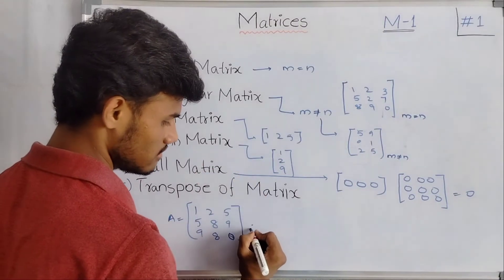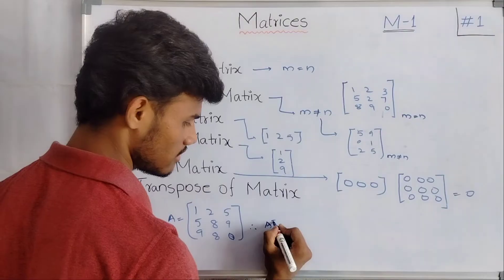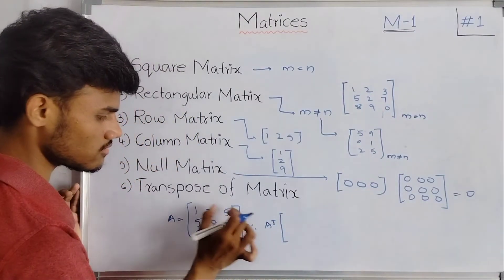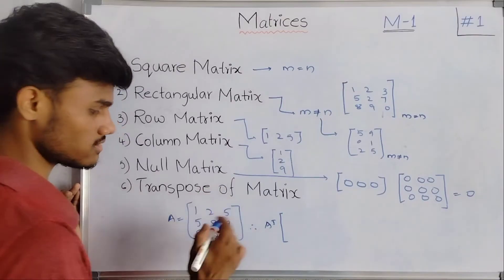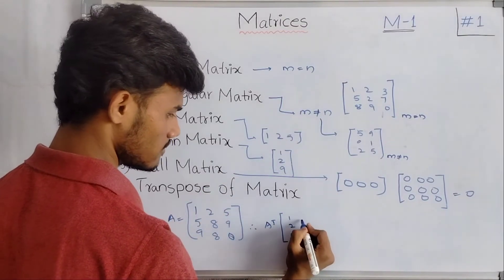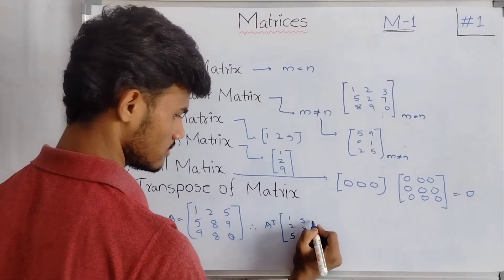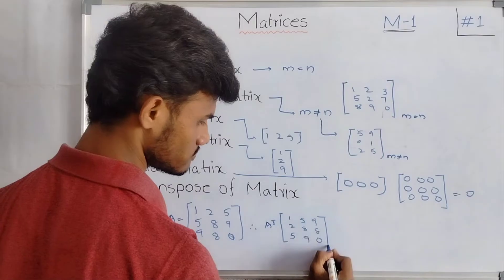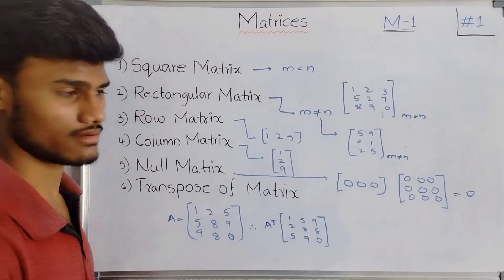Therefore, the transpose of A is obtained by changing the rows to columns and columns to rows. The resulting transpose matrix contains elements 1, 5, 9 / 2, 8, 8 / 5, 9, 0 arranged accordingly. This is called the transpose of a matrix.